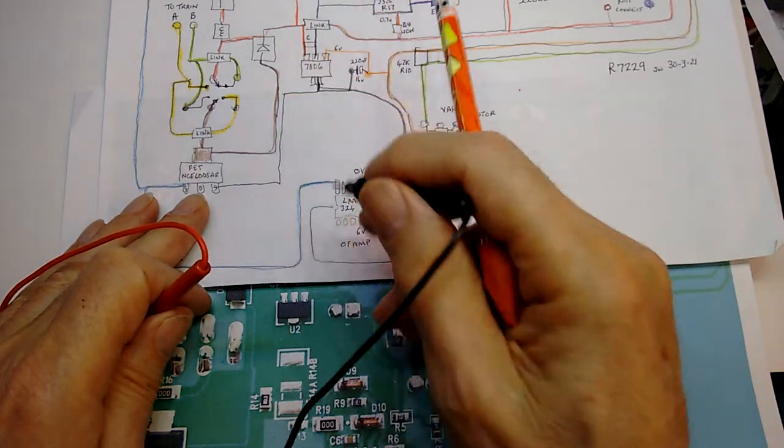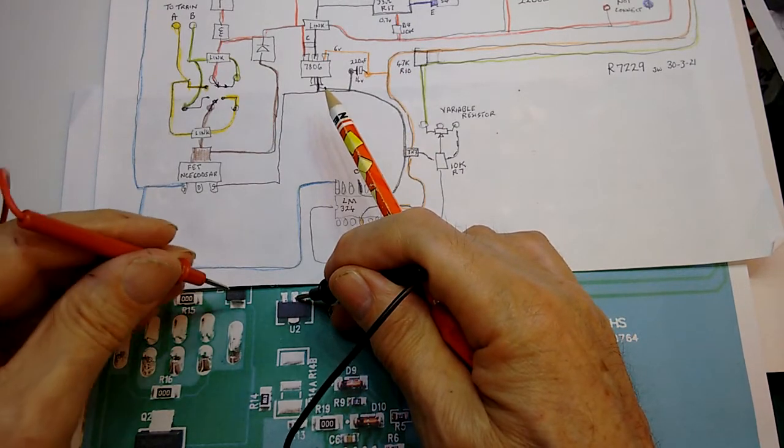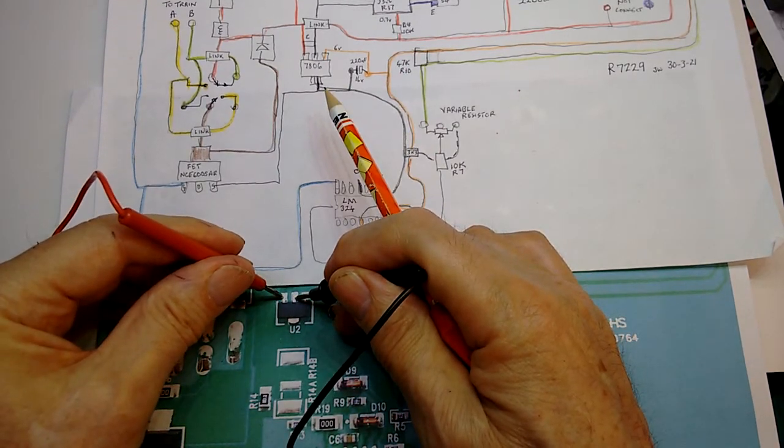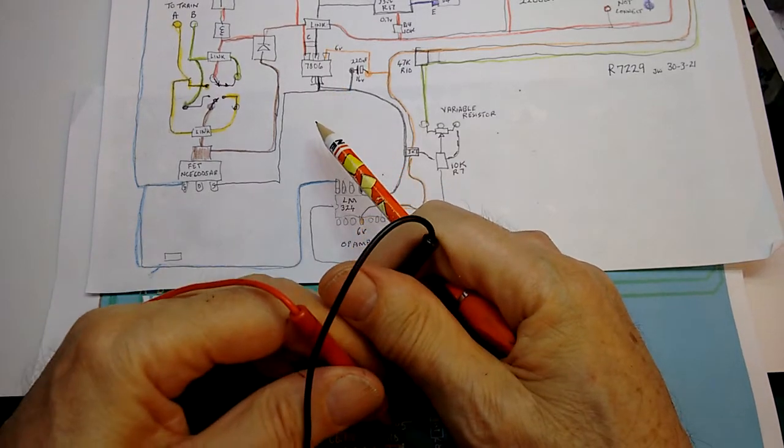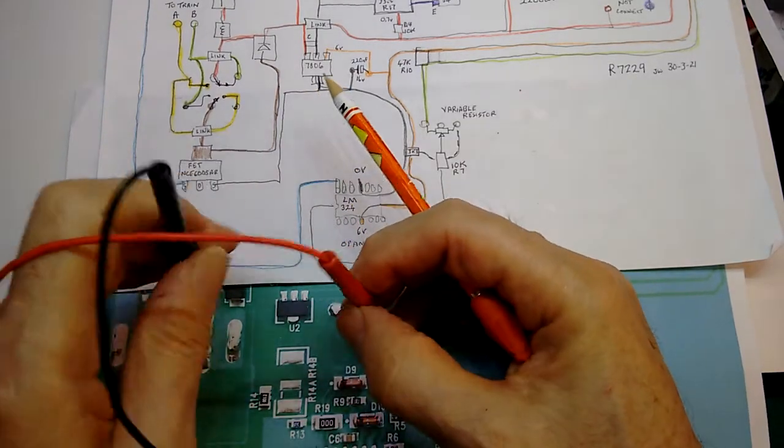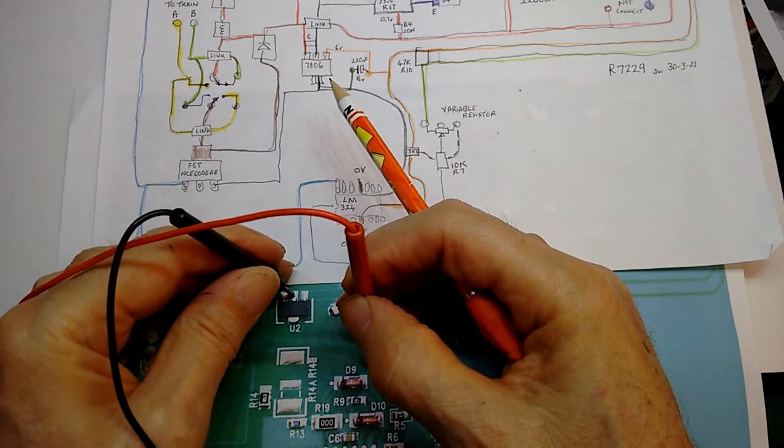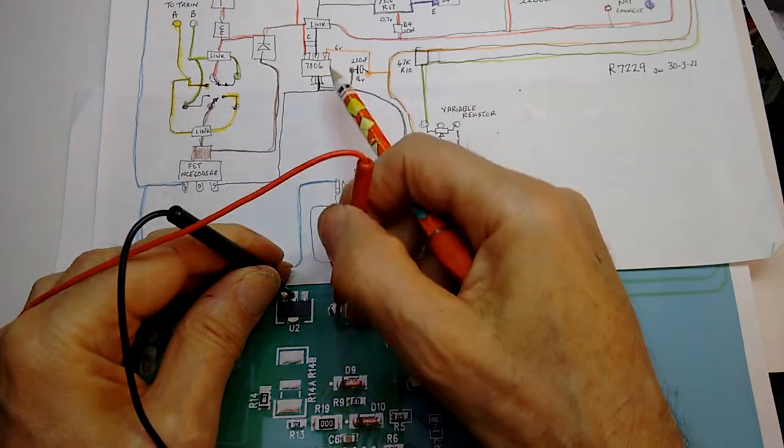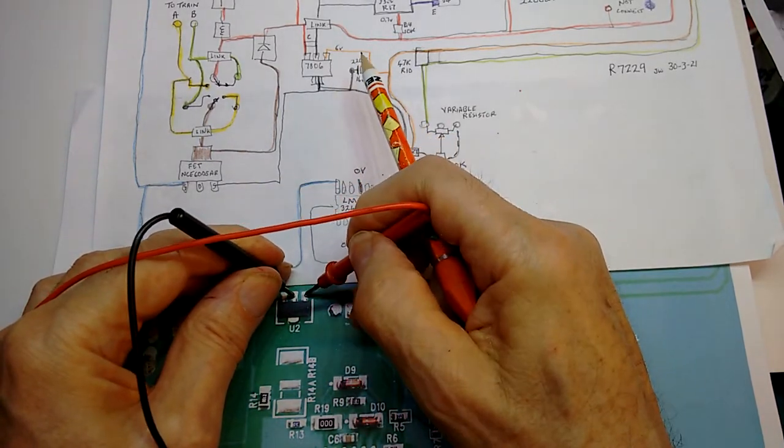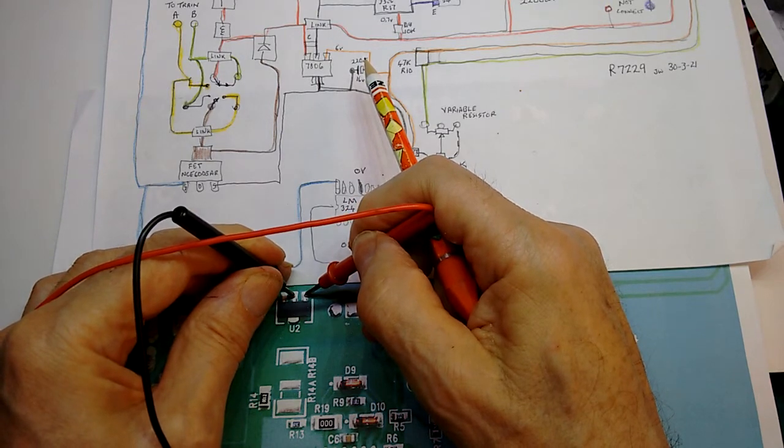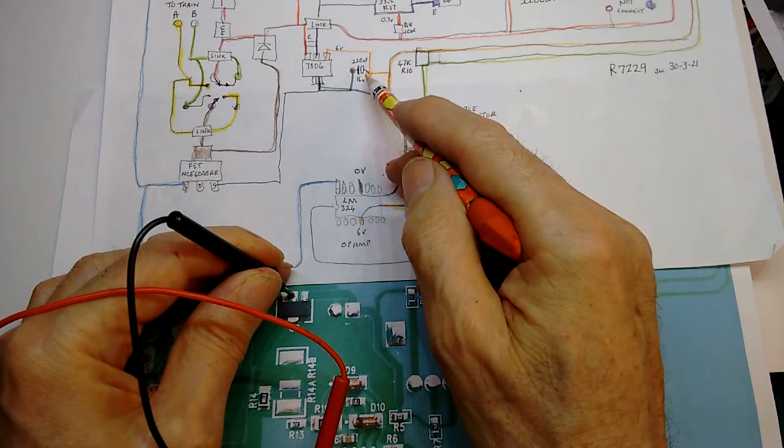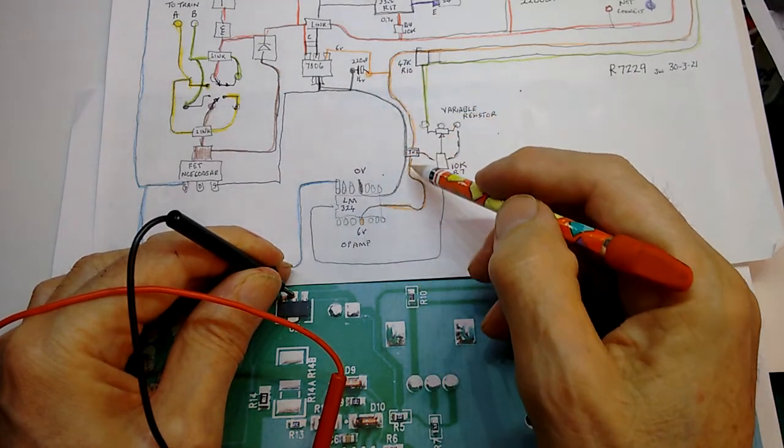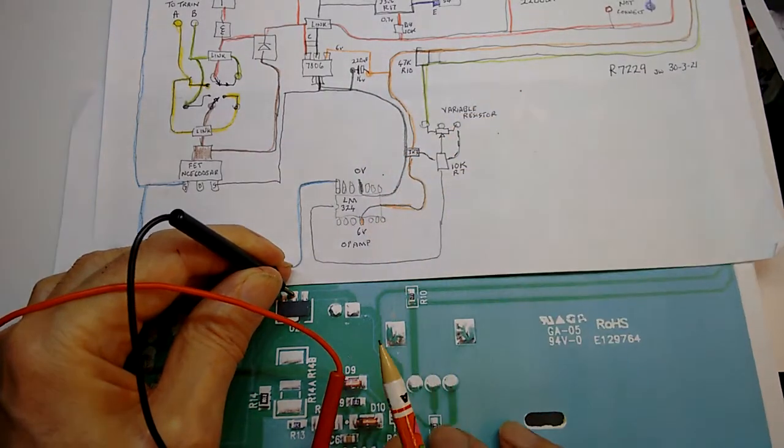If I look here, the middle of the 7806 should be no volts, and this should be the incoming voltage. So what I do is put that onto there, that onto there, and that should give me my incoming voltage. I can then swap it over to the other side so I'm still measuring no volts on the middle one but bring it across and touch there, and that should give me six volts.